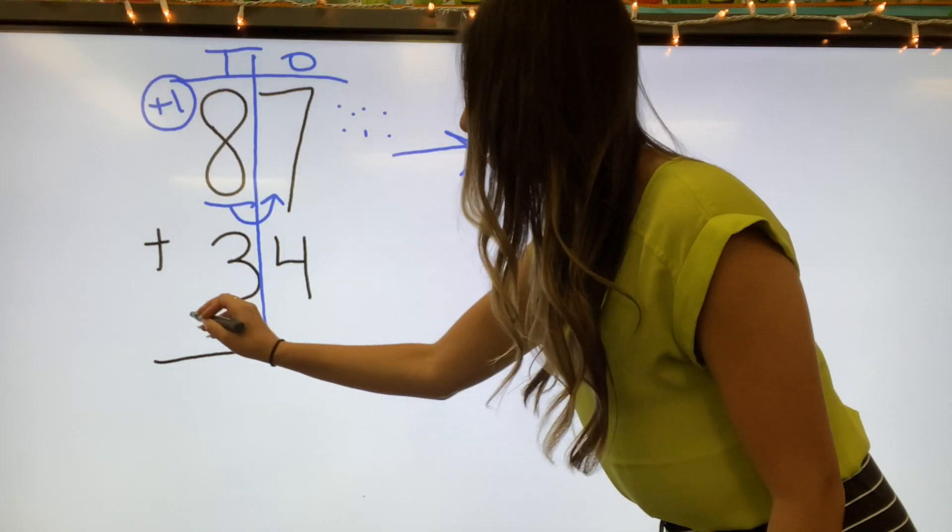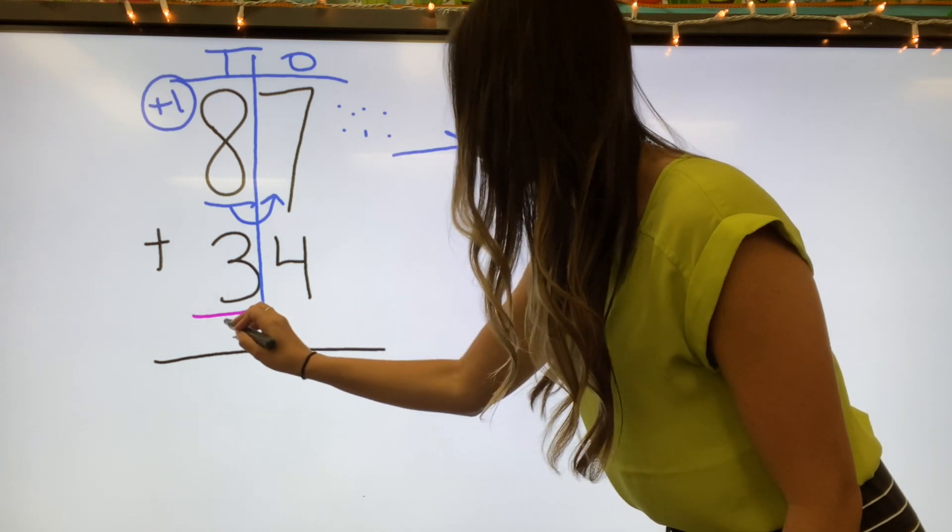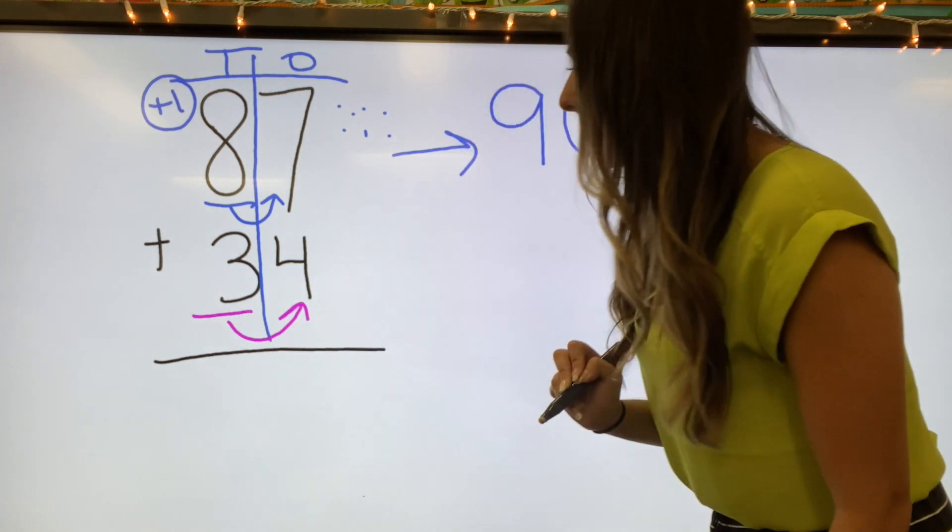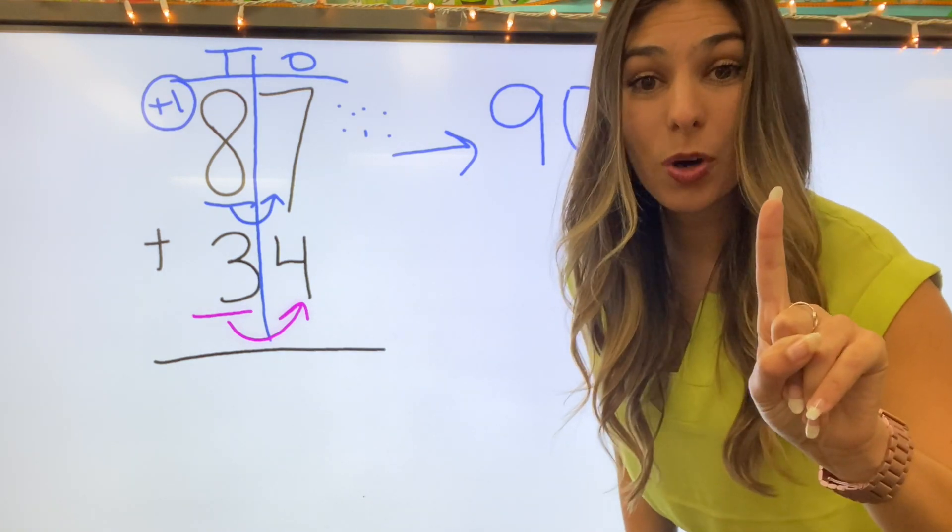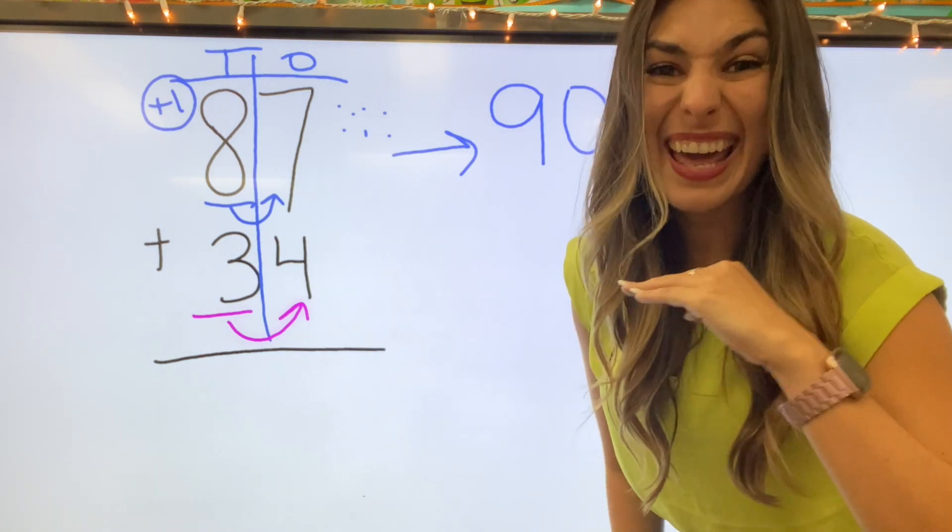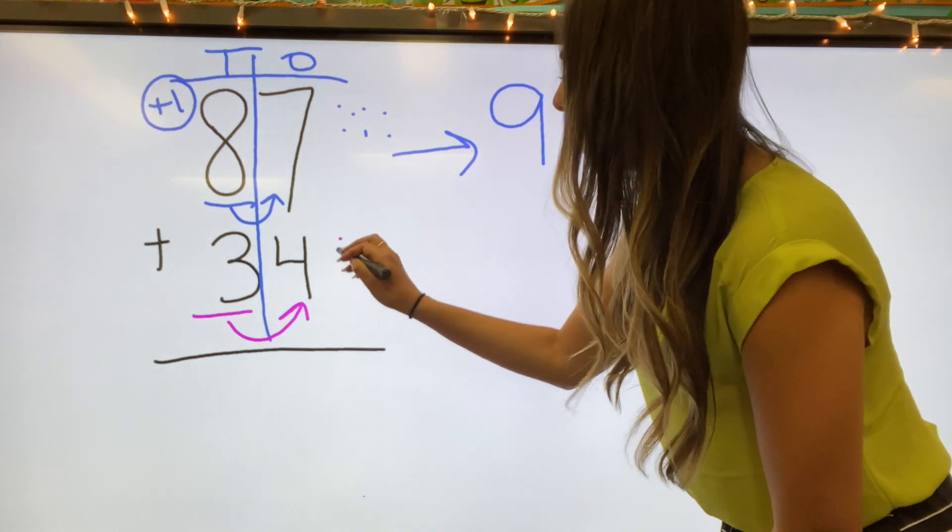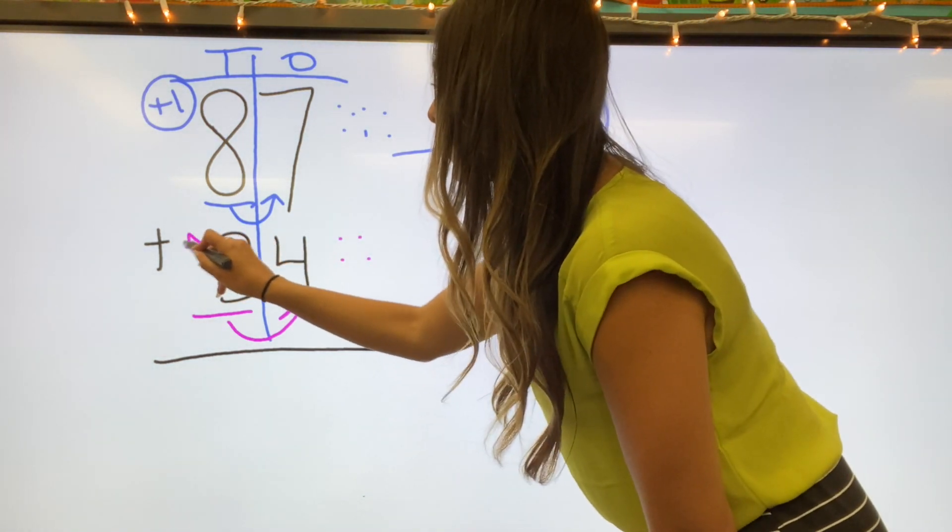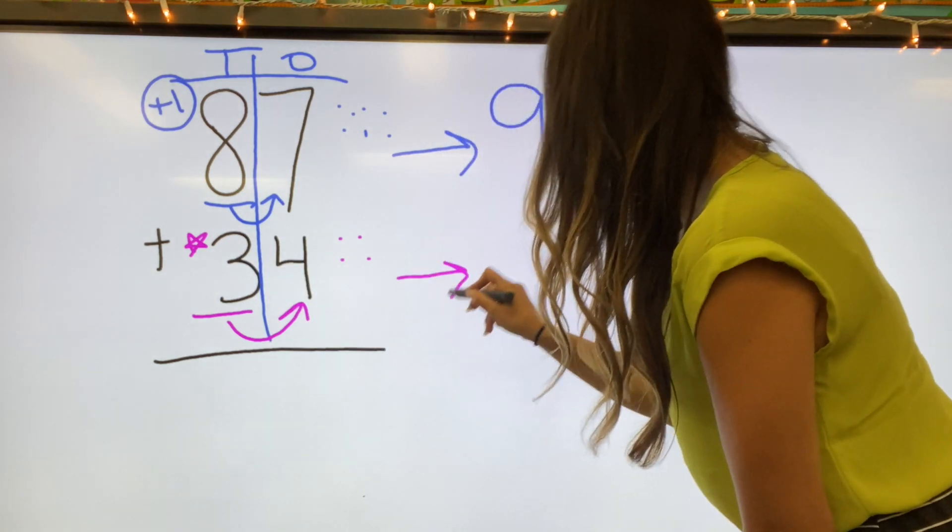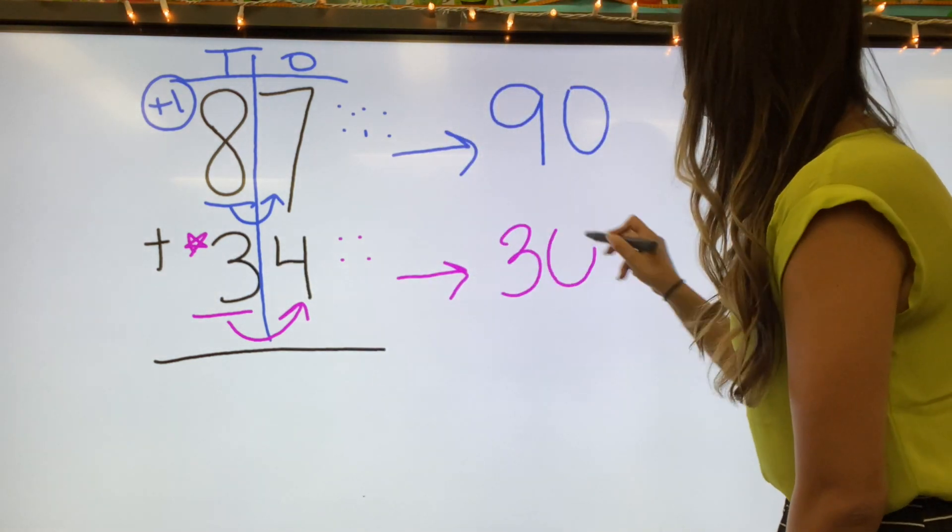Next number. Find my place in that tens, which is the three. I'm going to look next door at my ones. And I'm going to follow that little rhyme. Five or greater, add one more, four below, let it go. So four is less than five. So I'm going to leave this three alone and bring it over here to 30.